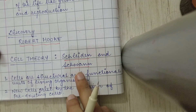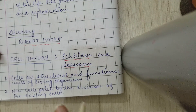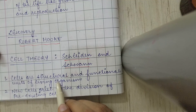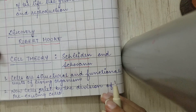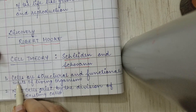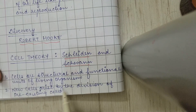There are two main postulates of the cell theory. The first states that cells are the structural and functional units of living organisms — meaning all organisms are made up of cells, the structure of the organism is made up of cells, and these cells carry out all the functions of the body, whether it is digestion, growth, or any other function.